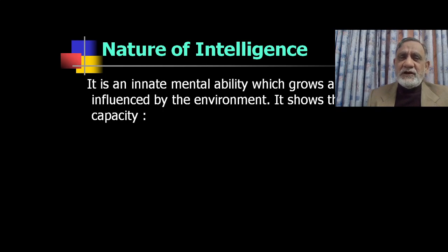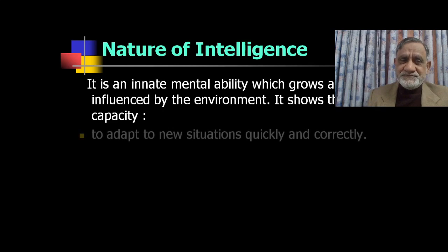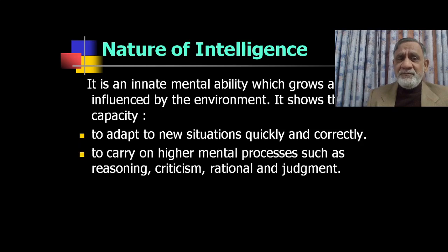Intelligence is a quality you receive both through genes and through environmental influence. Psychologists do debate the exact percentage contribution of genes versus environment to intelligence, but it is established that intelligence is both hereditary and improvable through environment. Intelligence shows the capacity to adapt to new situations quickly and correctly, and to carry on higher mental processes such as reasoning, criticism, rationality, and judgment.